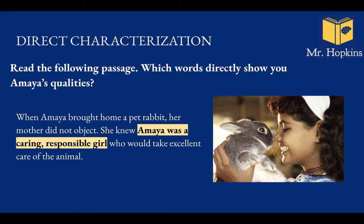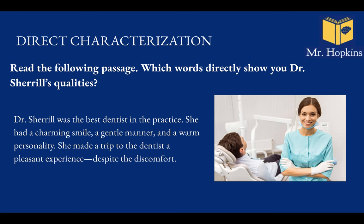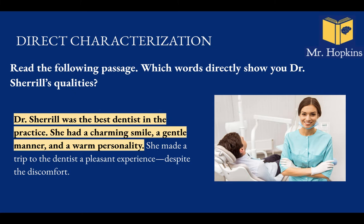Let's look at another example. Read the following passage — which words directly show you Dr. Cheryl's qualities? 'Dr. Cheryl was the best dentist in the practice. She had a charming smile, gentle manner and a warm personality. She made a trip to the dentist a pleasant experience, despite the discomfort.' Getting pretty easy: best dentist, charming smile, gentle manner, warm personality. It tells me directly what she is like.